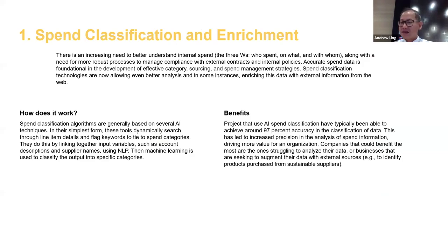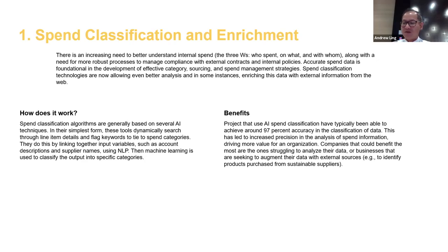On the spending classification example, AI can automatically classify spending items for us. AI can learn that if I would like to purchase a new logo, the history record shows the purchase should be within the range of 7,000 to 20,000. If this time the purchase is out of this range, the system will automatically alert you.